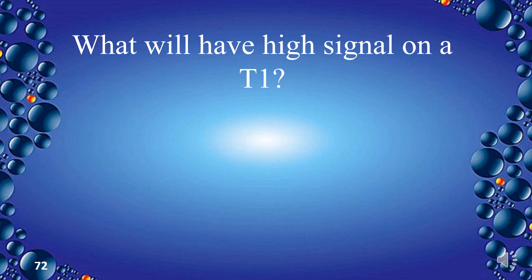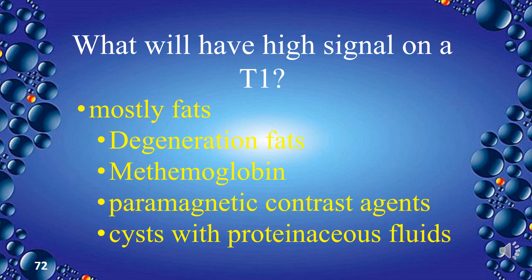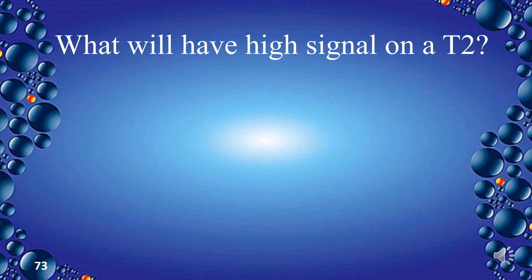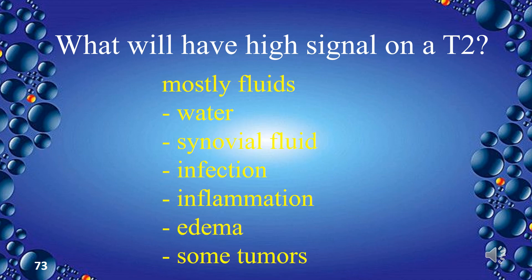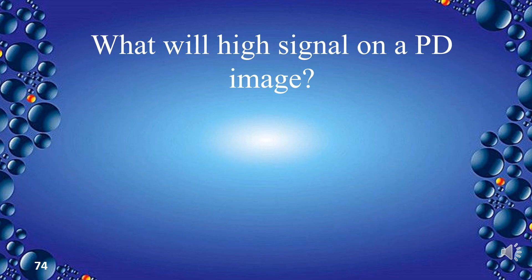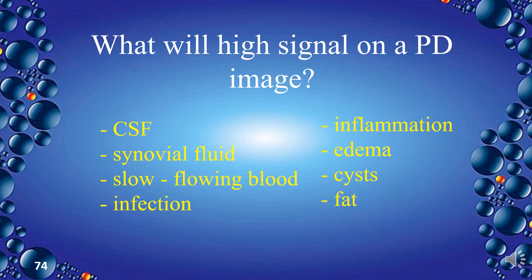What will have high signal on T1? Mostly fats such as degenerative fat, methemoglobin, paramagnetic contrast agents, and cysts with proteinaceous fluids. What will have high signal on T2? Mostly fluids such as water, synovial fluid, infection, inflammation, edema, and some tumors. What will have high signal on a PD image? CSF, synovial fluid, slow-flowing blood, infection, inflammation, edema, cysts, and fat.